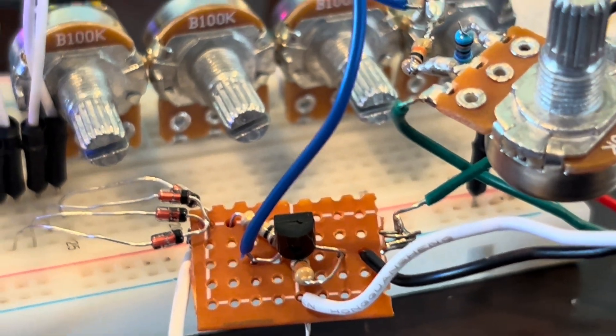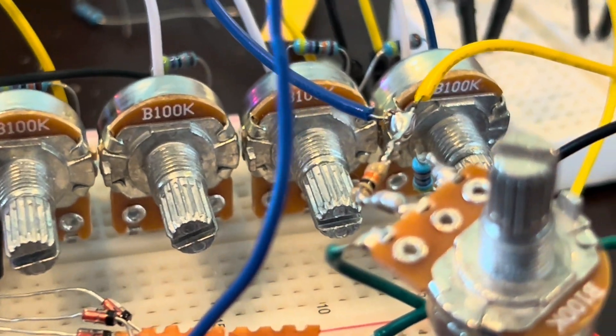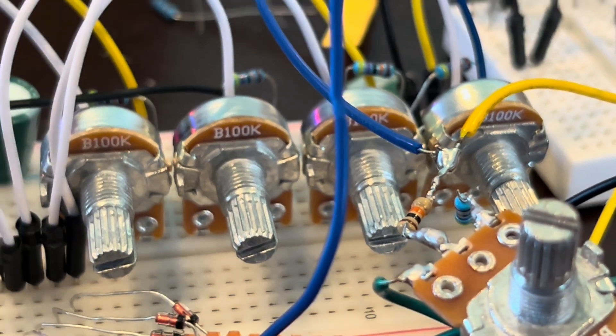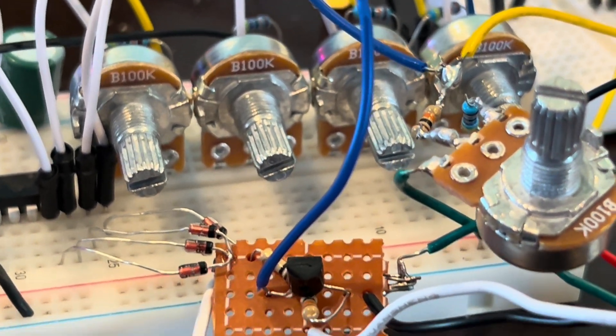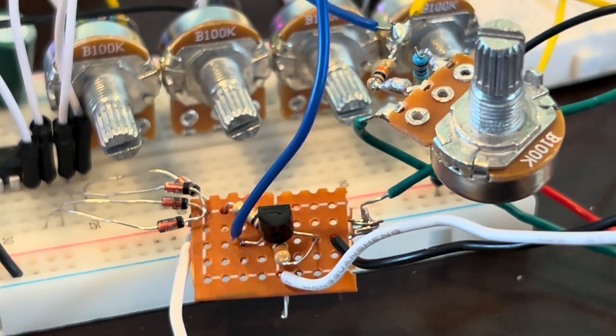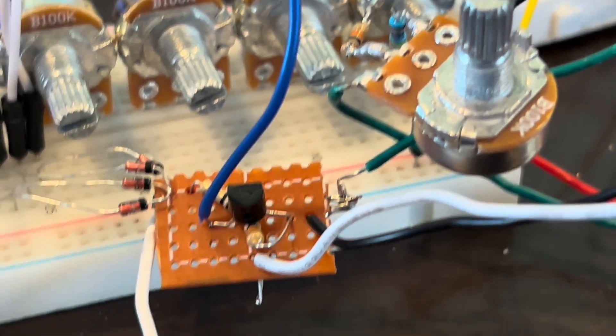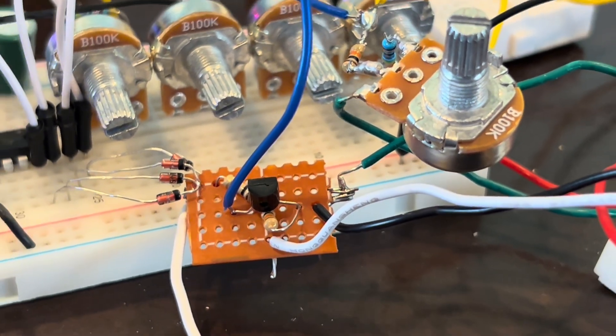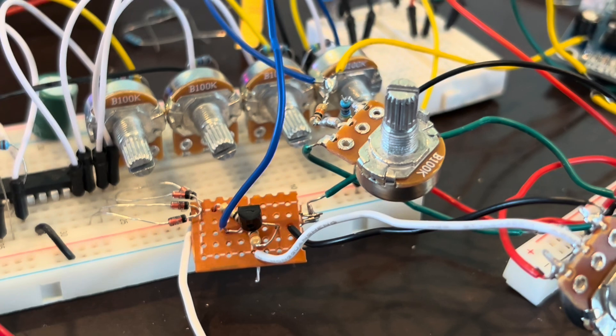Each of these potentiometers behind there are set to a different voltage between zero and five volts, and they're scaled down through a voltage divider into the base of this transistor.